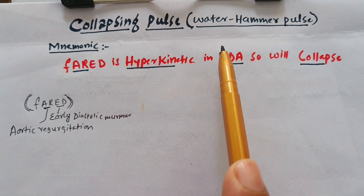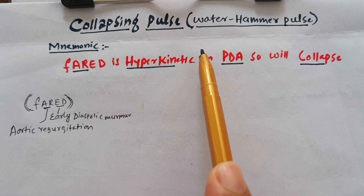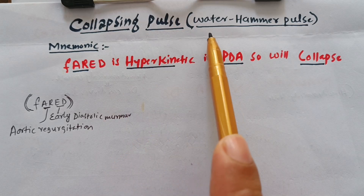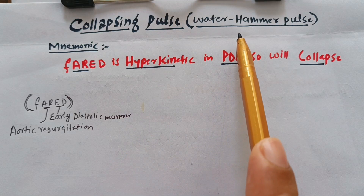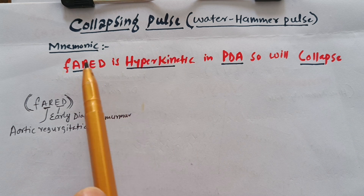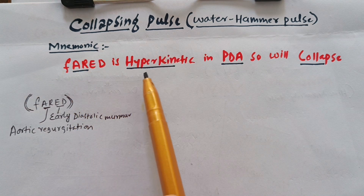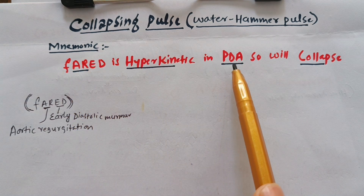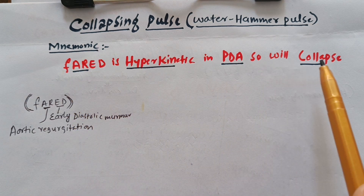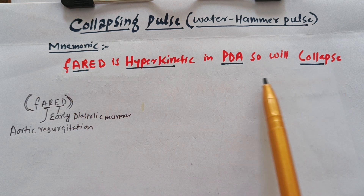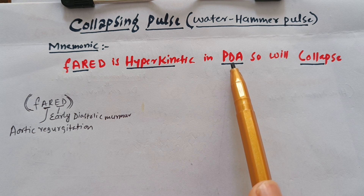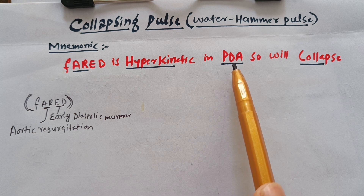We'll be talking about collapsing pulse, which is also called water hammer pulse. The mnemonic here is PDAM: P stands for hyperkinetic conditions, D for PDA (patent ductus arteriosus), A for aortic regurgitation, and M for more hyperkinetic states.